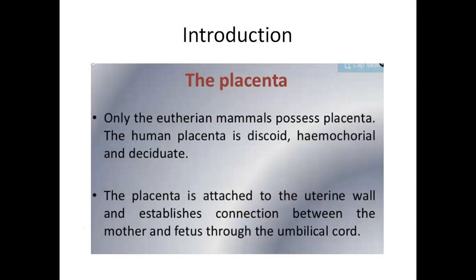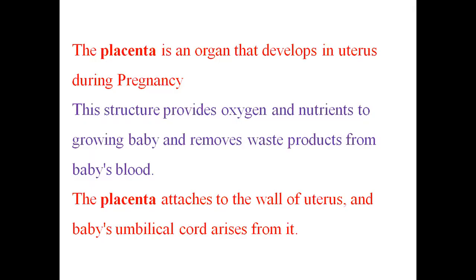Now, what is placenta? Only eutherian mammals possess a placenta. In humans, the placenta is discoidal, hemochorial, and deciduate — I will explain what these terms mean. The placenta is attached to the uterine wall and establishes a connection between the mother and fetus through the umbilical cord. Placenta is an organ that develops inside the uterus during pregnancy.